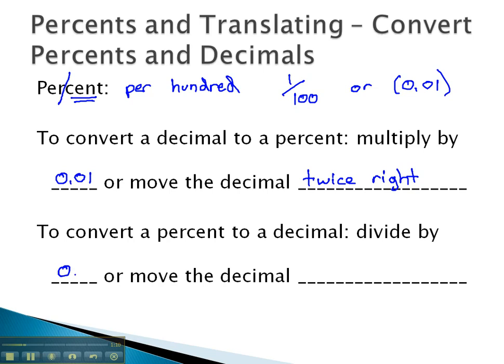To go the other way, we simply divide by 0.01, or move the decimal twice to the left.